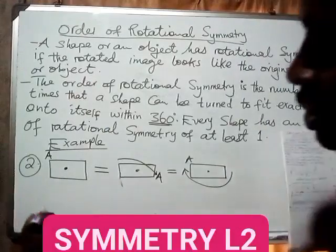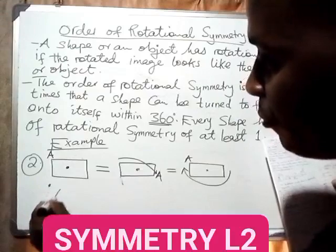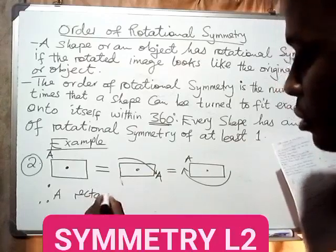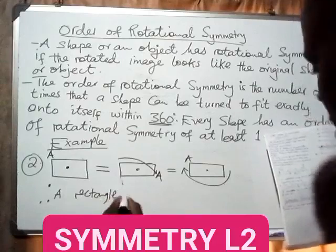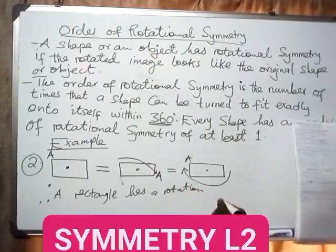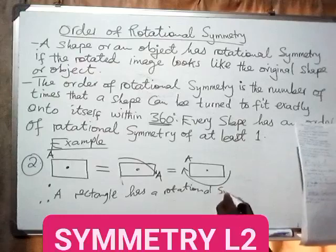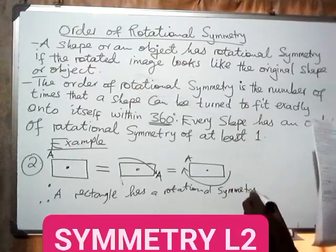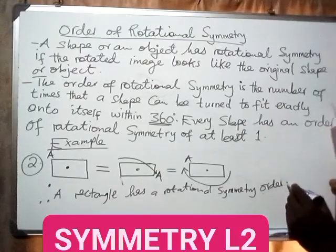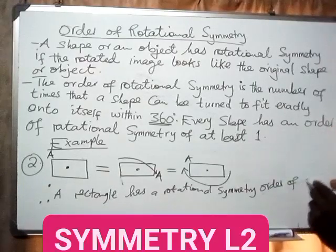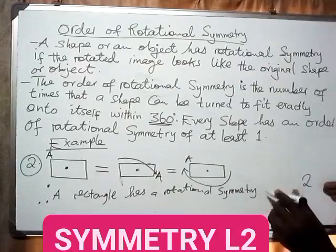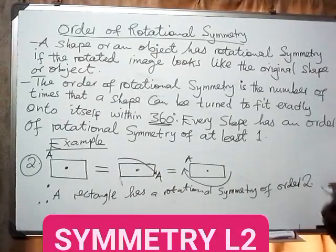In summary, a rectangle has a rotational symmetry of order two, because it fits onto itself two times within a full 360-degree rotation.